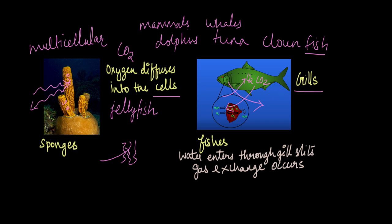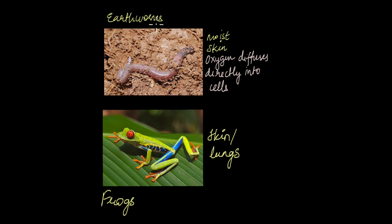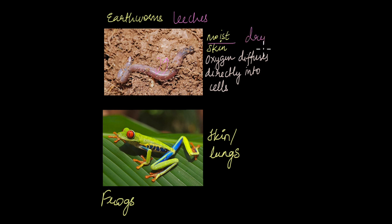Now let's move on to land organisms. We saw how land plants breathe — what about land animals? Simple land animals like earthworms and leeches don't have lungs. They have a moist skin and breathe through it directly, so oxygen diffuses directly into the cells from the atmosphere and carbon dioxide diffuses directly out. Because of this direct diffusion through skin, earthworms and leeches cannot survive in dry environments — the skin must remain moist for oxygen to diffuse in and carbon dioxide to diffuse out.